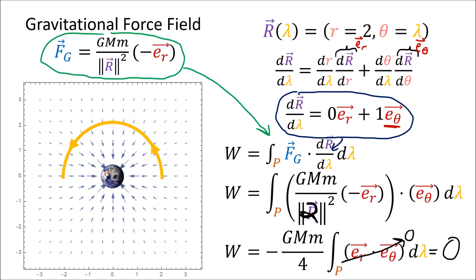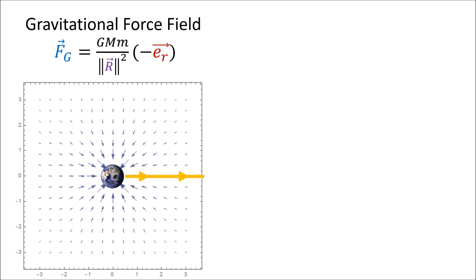With this particular path the field does no work on the object, and that makes sense since the path doesn't line up with the direction of the force field at all. Here's another example: in this case the path is traveling outward in a straight line, with a parameterization where the radius equals the time parameter lambda and the angle is always zero. Calculating the tangent vectors using the chain rule gives us that the tangent vector is just the er basis vector, which makes sense since the path is always pointing outward.